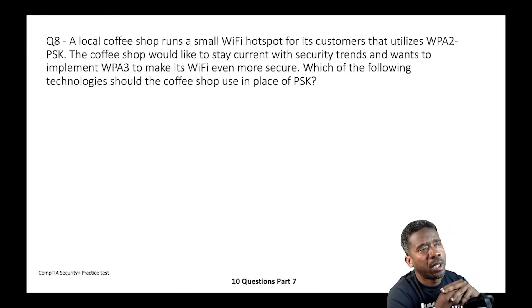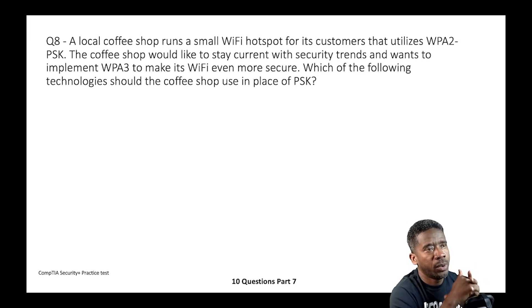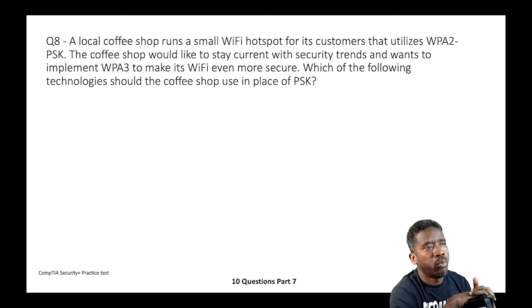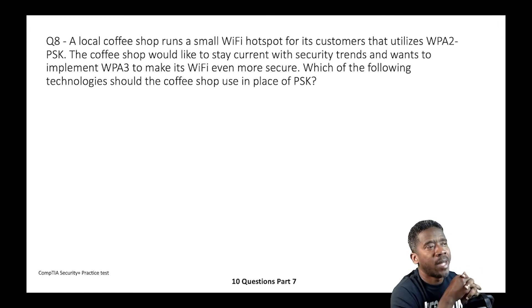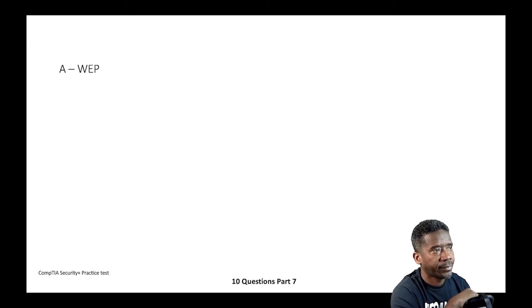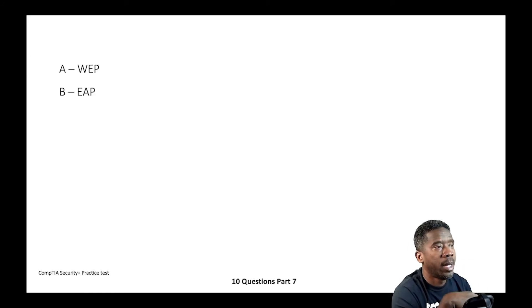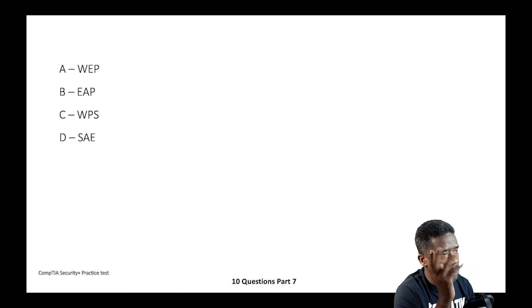Question eight: A local coffee shop runs a small Wi-Fi hotspot utilizing WPA2 PSK. The coffee shop wants to implement WPA3 to make its Wi-Fi more secure. Which of the following technologies should the coffee shop use in place of PSK? A) WEP, B) EAP, C) WPS, or D) SAE.